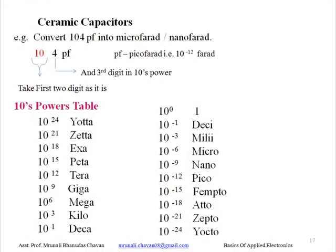Hello friends. In the previous lecture we had seen ceramic capacitors and how to convert the picofarad value of a capacitor into microfarad. In today's lecture we are going to see how to convert the picofarad value into nanofarad. As we saw for conversion, the given values of ceramic capacitors are like 104, 101, 202, and so on. To convert the value, we take the first two digits as they are and the third digit as a power of ten, then convert that value into microfarad or nanofarad. A table of powers of ten is shown; we will go through this table and then turn to the conversion into nanofarad.